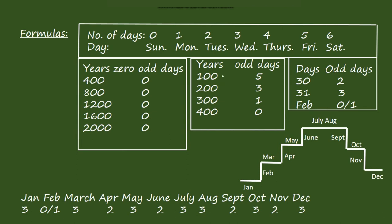We form a summary table: multiples of 400 (400, 800, 1200, 1600, 2000) have 0 odd days; 100 years = 5 odd days, 200 years = 3 odd days, 300 years = 1 odd day, 400 years = 0 odd days. For months with 30 days, 2 odd days; with 31 days, 3 odd days; February gives 0 or 1. The day mapping: 0 = Sunday, 1 = Monday, 2 = Tuesday, 3 = Wednesday, 4 = Thursday, 5 = Friday, 6 = Saturday.